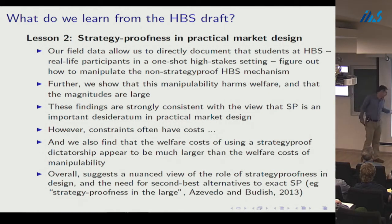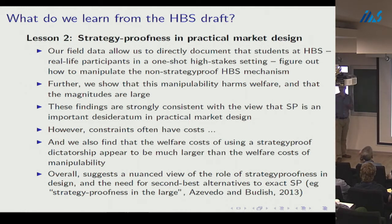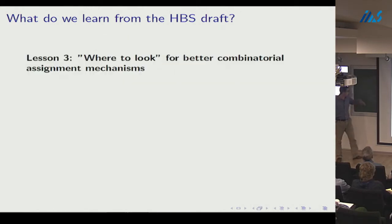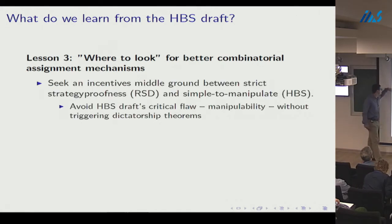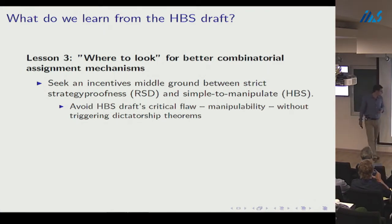Overall these results suggest a nuanced view of the role of strategy-proofness in design and the need for second-best alternatives. One notion I've been working on is a second-best approximate strategy-proofness concept with Eduardo Azevedo called 'strategy-proofness in the large.' The third lesson is about where to look for better mechanisms: the HBS draft is very simple to manipulate — just over-report popular stuff — and practitioners often fail to take incentives seriously.